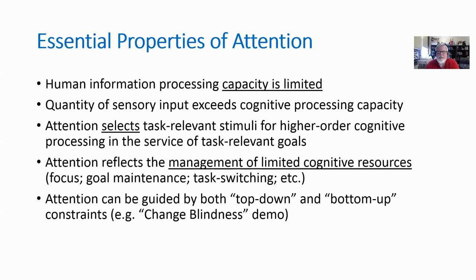Attention selects task-relevant stimuli coming in from our senses. Out of all that information, it selects what is task relevant and passes it on to the cognitive systems for higher levels of processing, such as recognition of an object. In a nutshell, attention reflects the management of our limited cognitive resources, and it involves things like focusing on the right information.